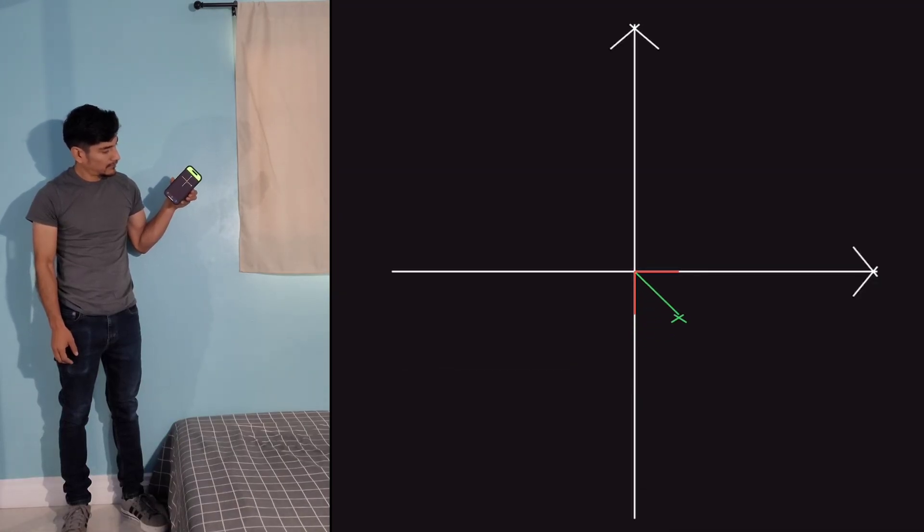When I switch to the vector tab of the accelerometer, we can see when at rest on earth, it detects that the vector or force is down, as shown by the green line.